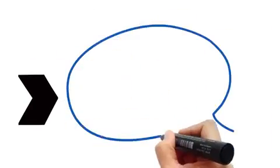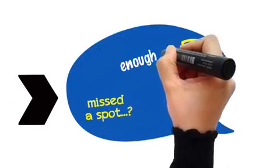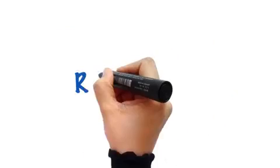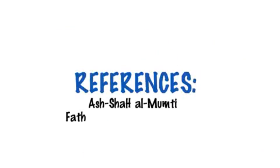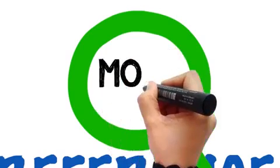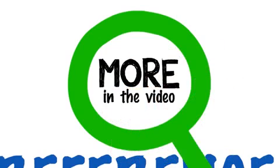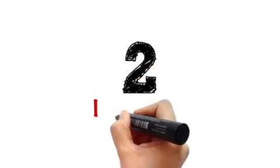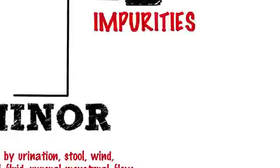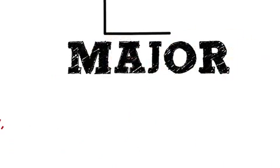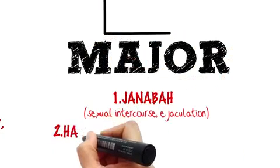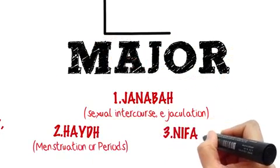And finally, in the next video, we will answer some frequently asked questions about Ghusl. Alhamdulillah, all the information and answers are taken from the writings and fatawa of the scholars. Let's begin. There are two kinds of ritual impurities: the minor impurity and the major impurity, which occurs as a result of Janabah, Haid, or Nifas.